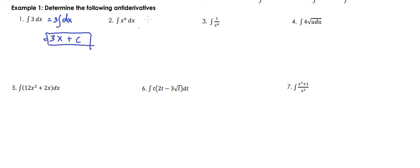Number two: integral of x raised to 6 dx. Using the anti-differentiation formula, we add 1 to 6, so 6 plus 1 equals 7, and the resulting sum will be our new power and also our denominator. So the answer is x raised to 7 over 7 plus C.